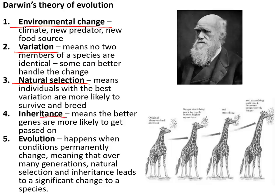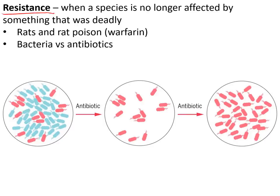This leads to inheritance, where those good genes are more likely to be passed on, producing more offspring with the better genes. Over time this leads to evolution — that process repeating over many generations eventually creates an entirely new species.